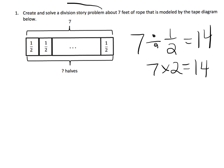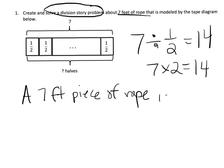Now the story problem, we're supposed to create a story problem involving the 7 feet of rope. So this one example might be, and I'm not going to write the whole thing out, but we have a 7 foot piece of rope is cut into 1 half foot lengths. How many of these lengths can we create? So that's one example.